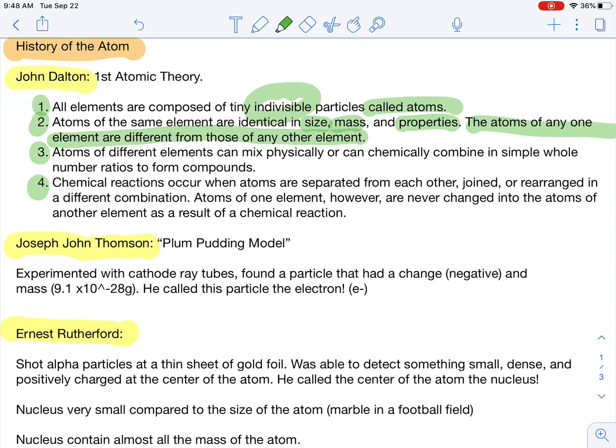And then chemical reactions occur when atoms are separated from each other, joined, or rearranged in a different combination. Atoms of one element, however, are never changed into the atoms of another element as a result of a chemical reaction. That's true. However, it is possible to change one atom into a different atom. That would be a nuclear change.